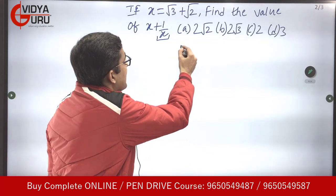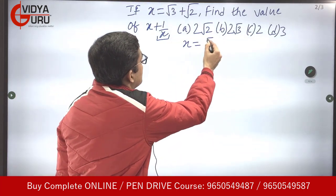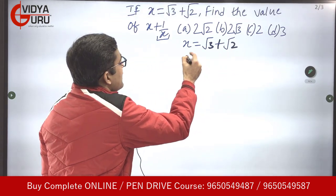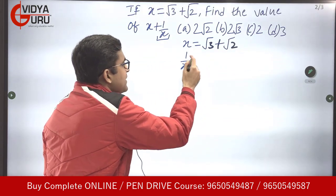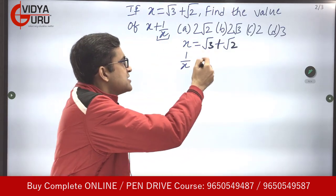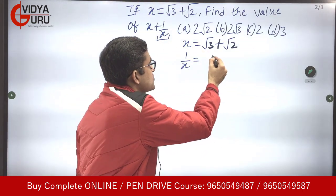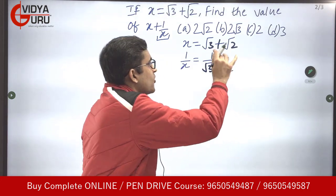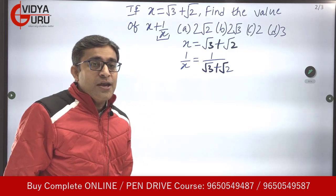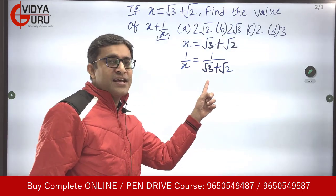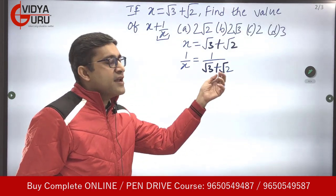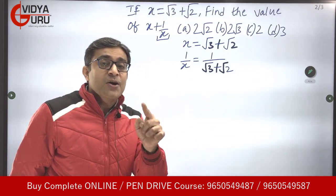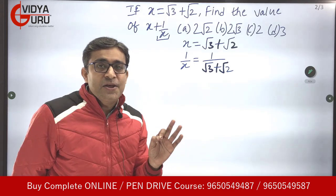Let's start working. x is equal to √3 + √2. Now what will be 1/x? 1/x will be the reciprocal, so it becomes 1 upon (√3 + √2). Now you know there is a square root in the denominator, so what are we going to do? We are going to rationalize the denominator.